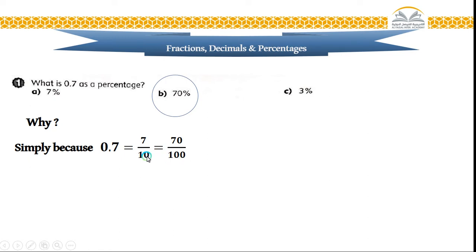Sure, I will multiply by 10 up and by 10 down. I will get 70 over 100, and this is our percentage. I will substitute 100 by the symbol of the percent.